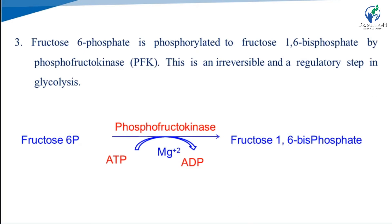In step 3, fructose-6-phosphate is phosphorylated to fructose-1,6-bisphosphate by phosphofructokinase. This is an irreversible and regulatory step in glycolysis. One ATP is required and magnesium is also needed. A phosphate from ATP is attached to carbon number 1, giving fructose-1,6-bisphosphate.